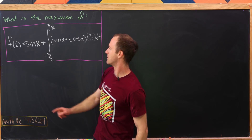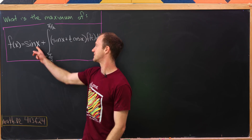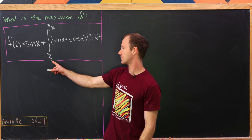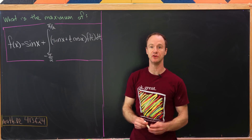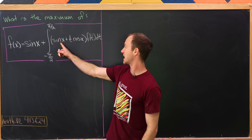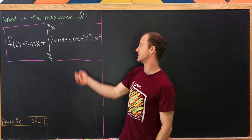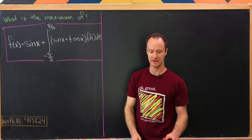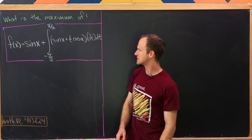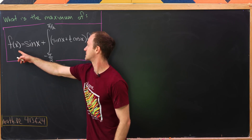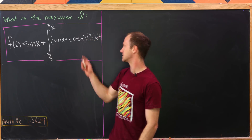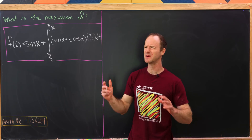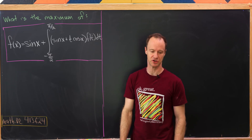We want to find the maximum of f(x), which is defined to be sine of x plus the integral from minus π/2 to π/2 of sine of x plus t·cosine of x, all multiplied by f(t) dt. That's what I meant when I said we've got this function that is recursively defined in terms of itself — it's like a continuous type of recursion.